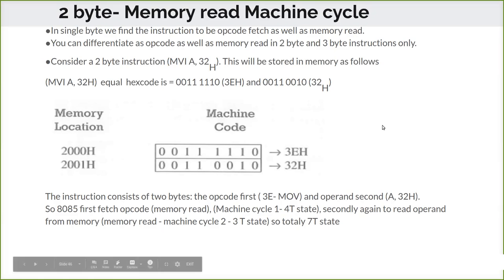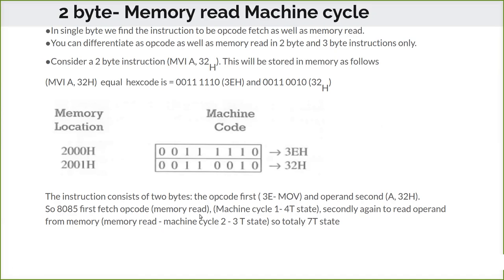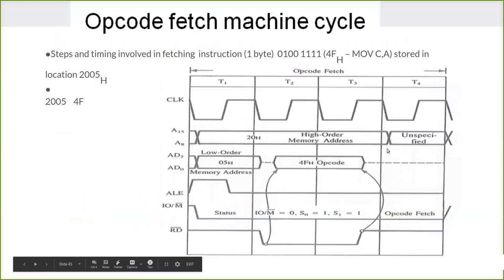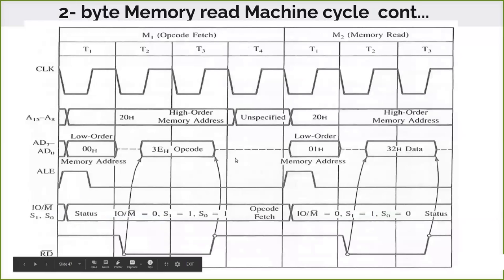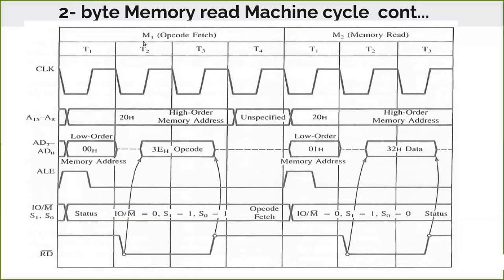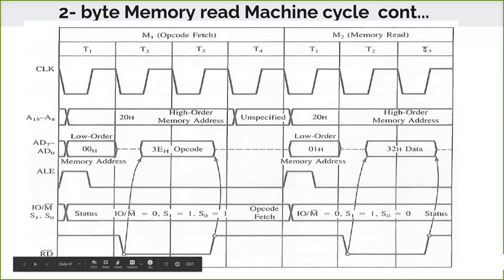The instruction consists of 2 bytes: the opcode 3E first, then the operand 32. The 8085 first fetches the opcode — that is the opcode fetch, which is also a memory read. Any opcode fetch requires 4 T-states. Then secondly, to read the operand data from the next memory location, another memory read is performed requiring 3 T-states. So in total, a 2-byte memory read requires 7 T-states. Now we will see the 2-byte memory read in detail.